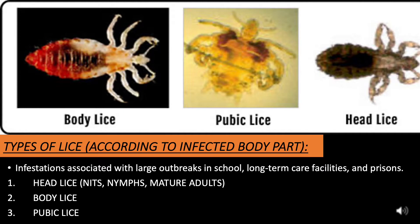The three types of lice are: number one, head lice — which include nits, nymphs, and mature adults; number two, body lice; and number three, pubic lice.